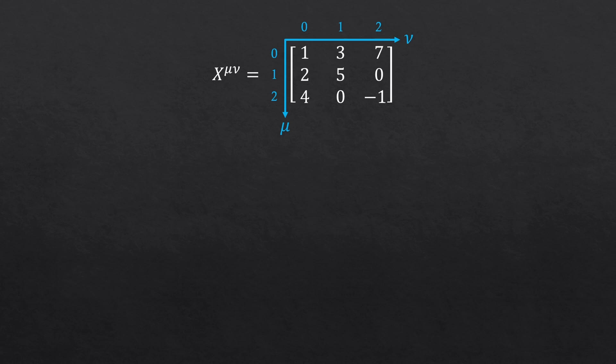All right, let me quickly test you. Which element is this? X one zero, so row is one and column is zero. One and zero, it's two. How about X two two? Row with two and column with two, so two two is negative one. And how about X zero two? Row is zero and column is two, so zero two, it's seven. All good?